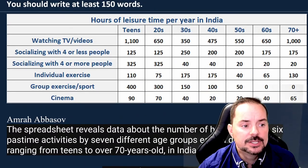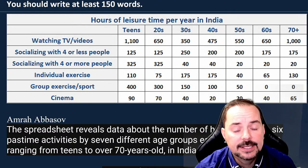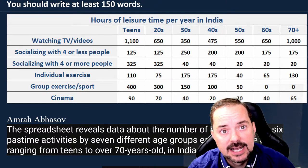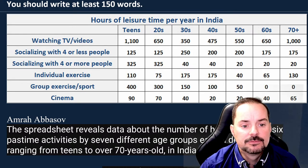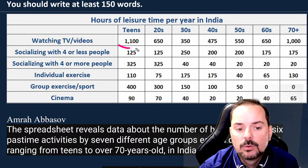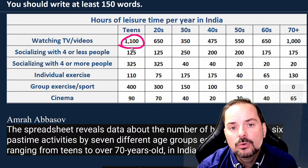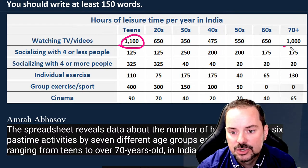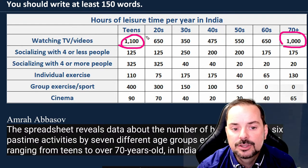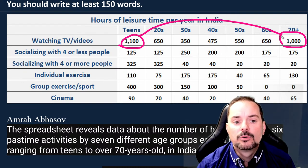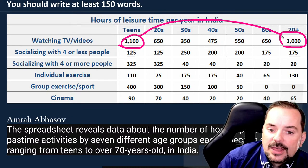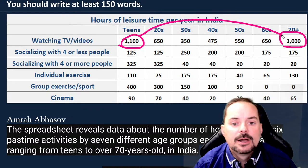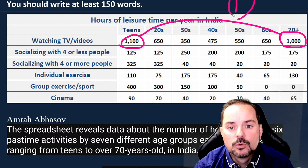When you write the analysis — the main part of Task 1 writing — you should identify the points. Although TV watching is the most popular for any age group, it is two to three times more popular for teens or people 70 plus than the other age groups. That's point number one.